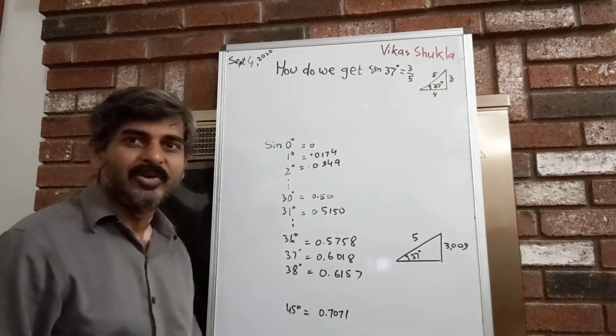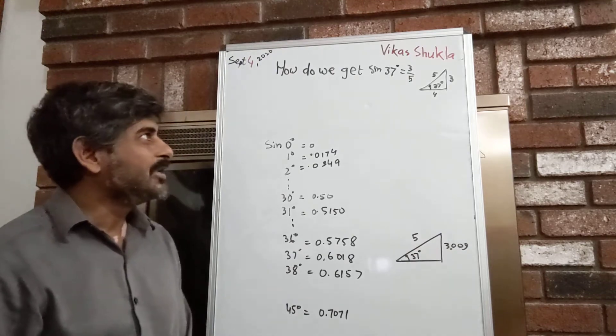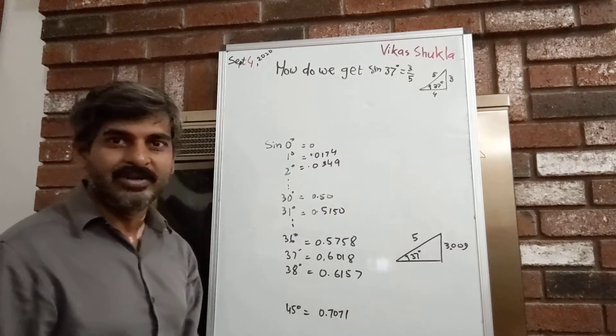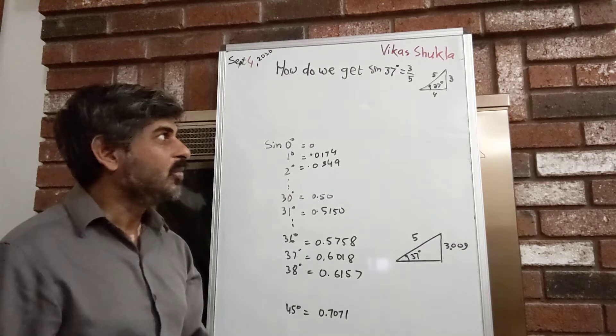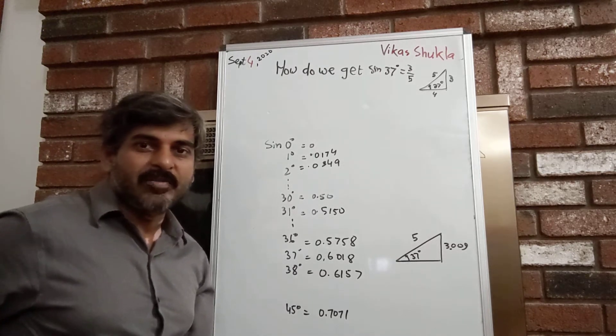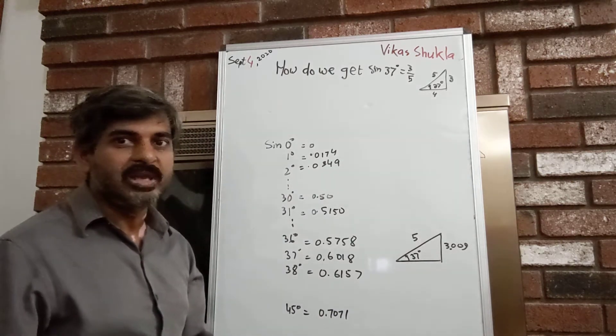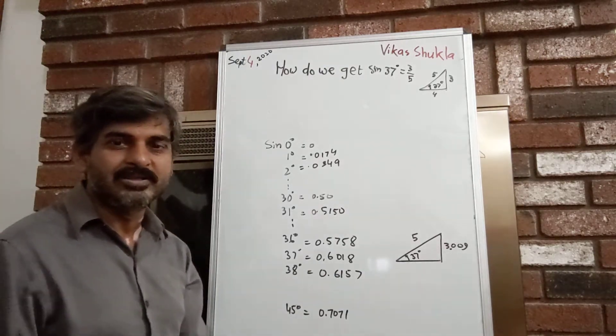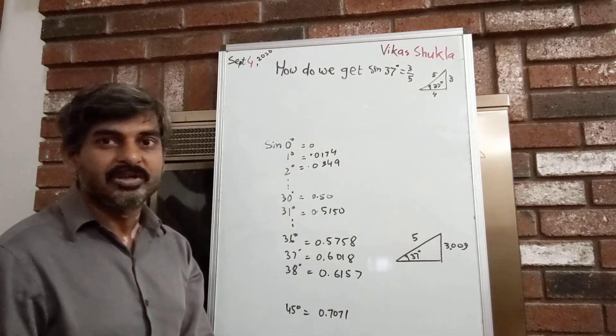Some time ago I created a video where I explained that the value of sine 37 degrees is 3/5, an easy-to-remember value that we can use to calculate values of cos 37, tan 37, or we can also use it to find the value of sine 53 degrees (90 minus 37).